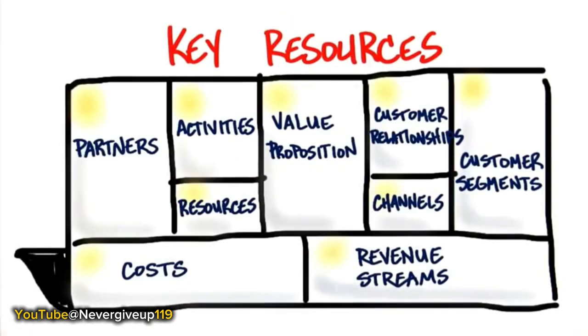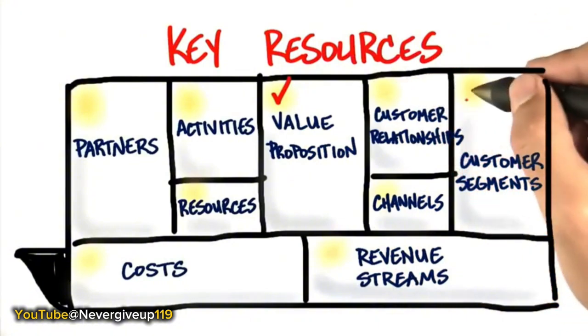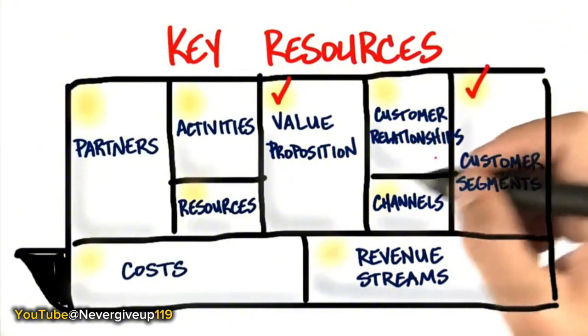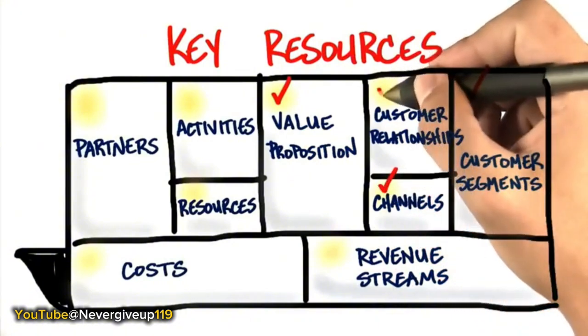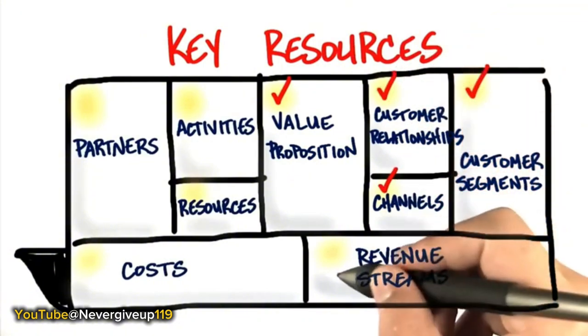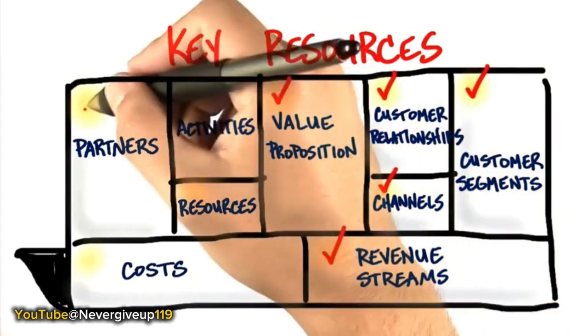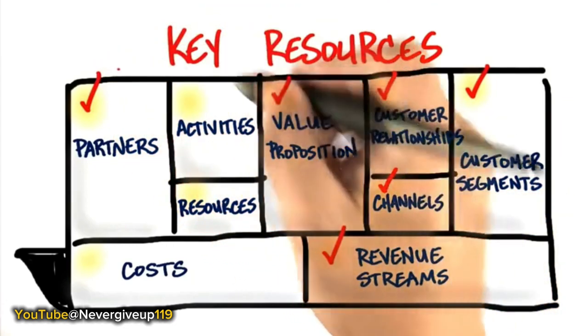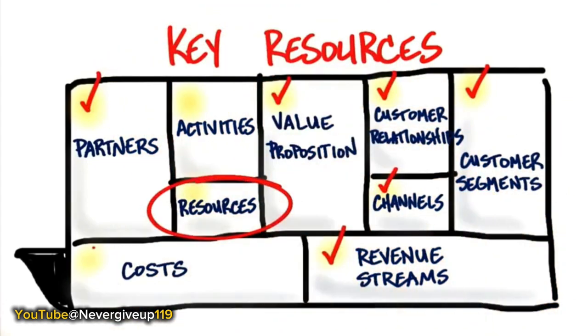Today we're going to talk about resources, activities, and costs. And congratulations, this is your last lecture. By now you're intimately familiar with the Business Model Canvas. We've talked about value props, customer segments, channels, customer relationships, revenue streams. We jumped ahead and talked about partners. And right now we're going to talk about key resources.